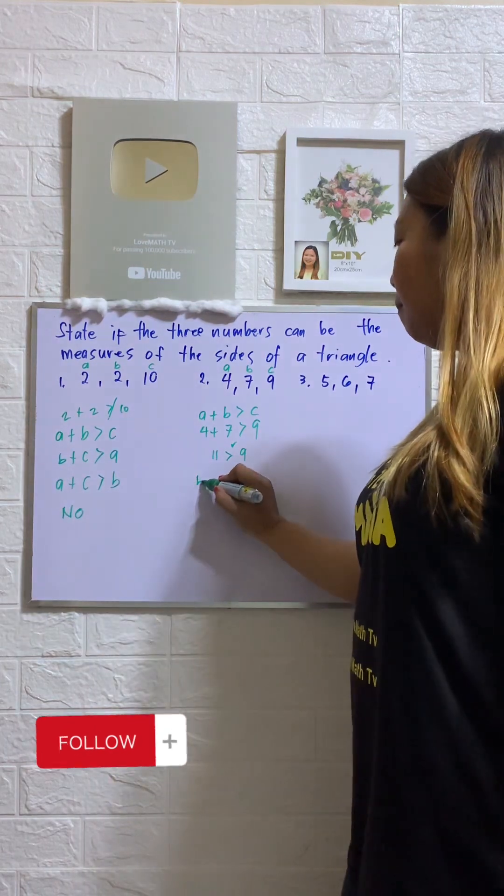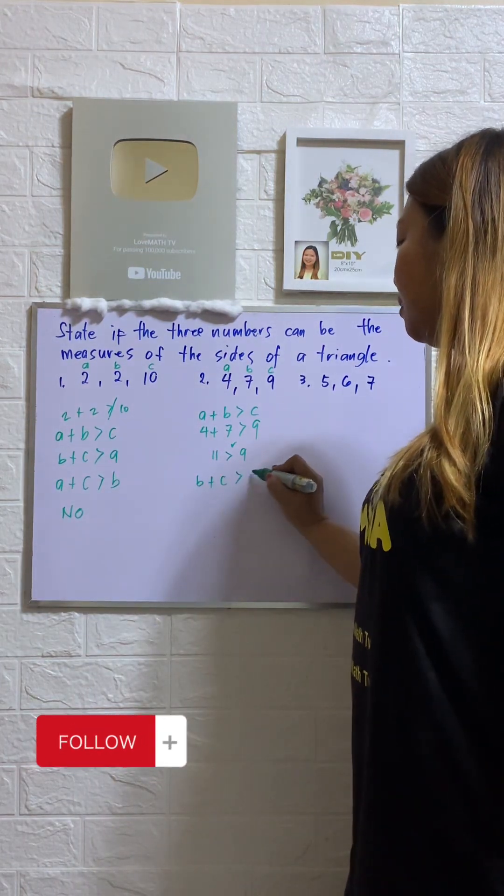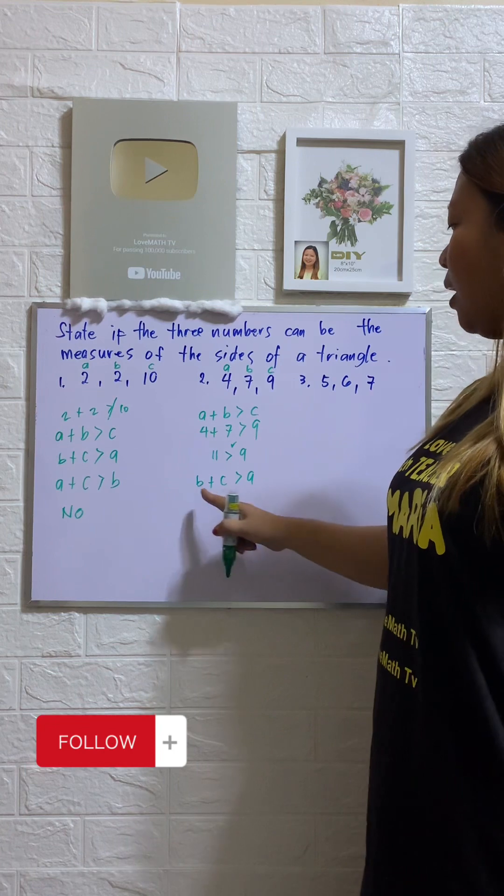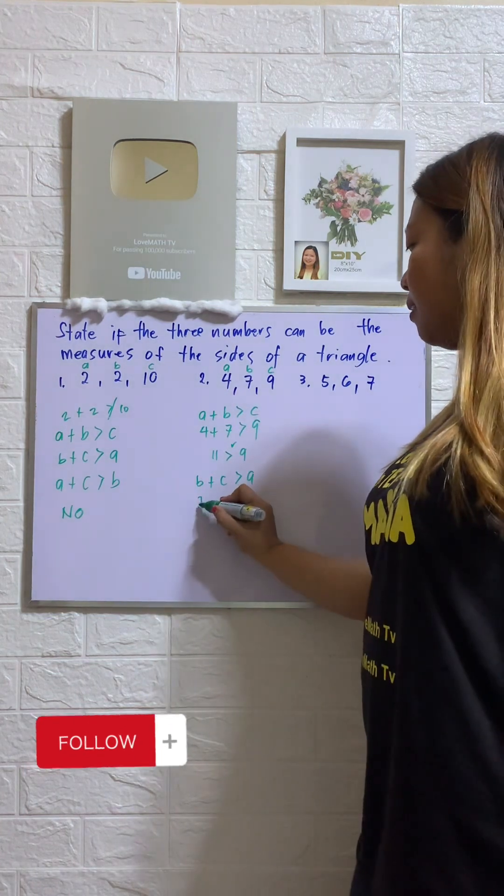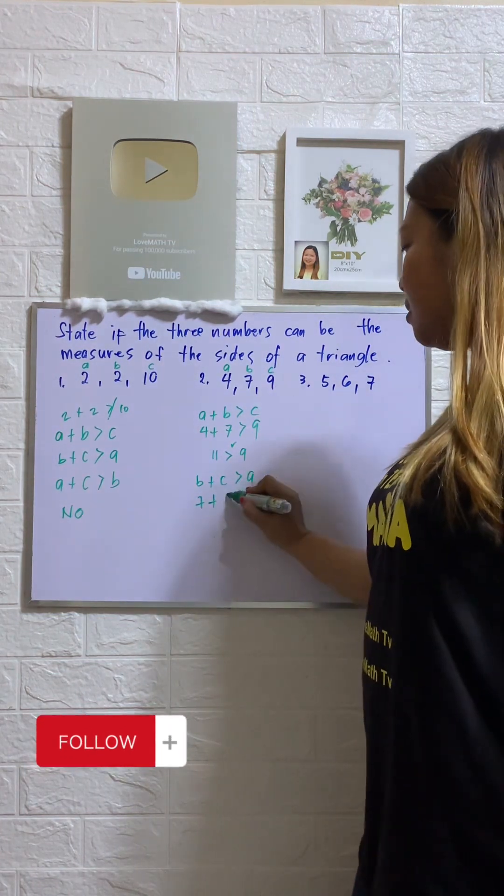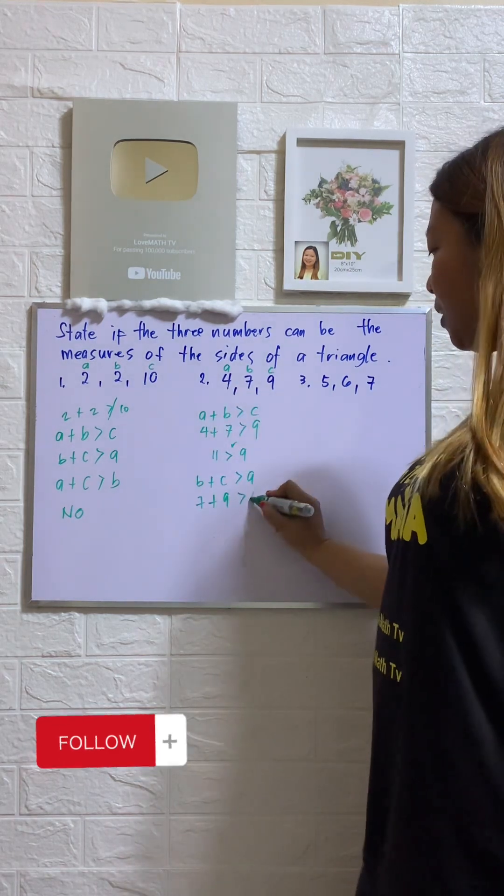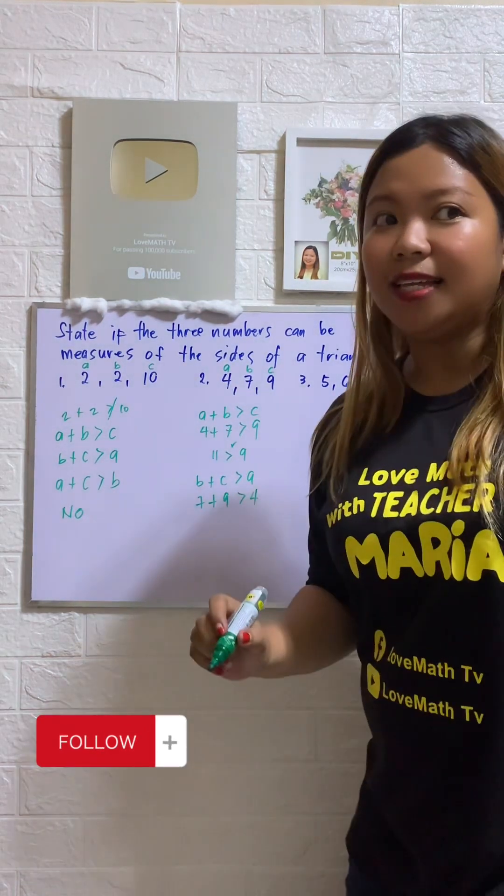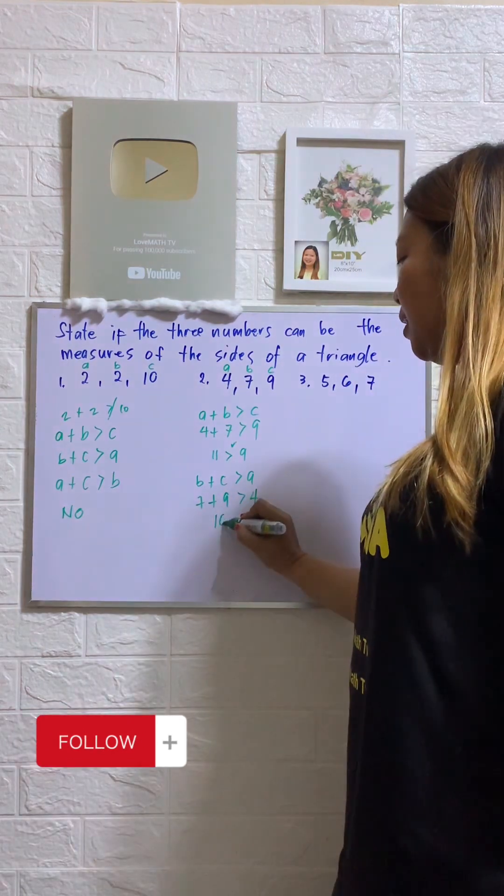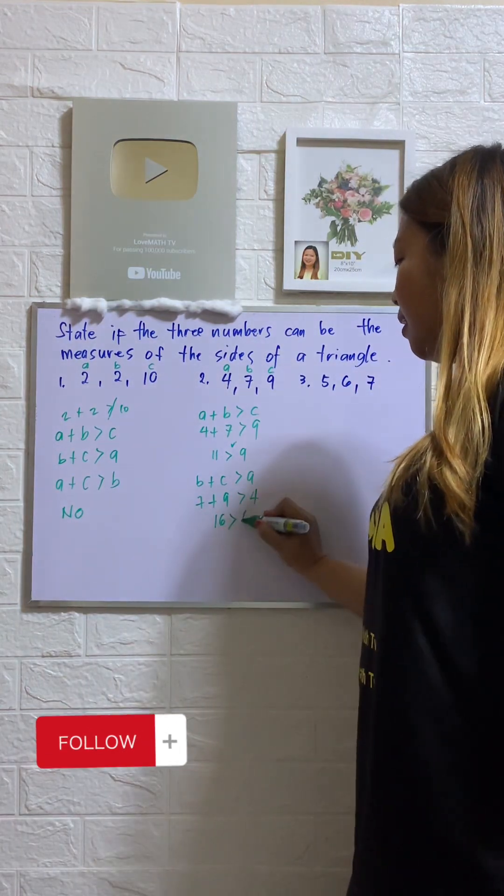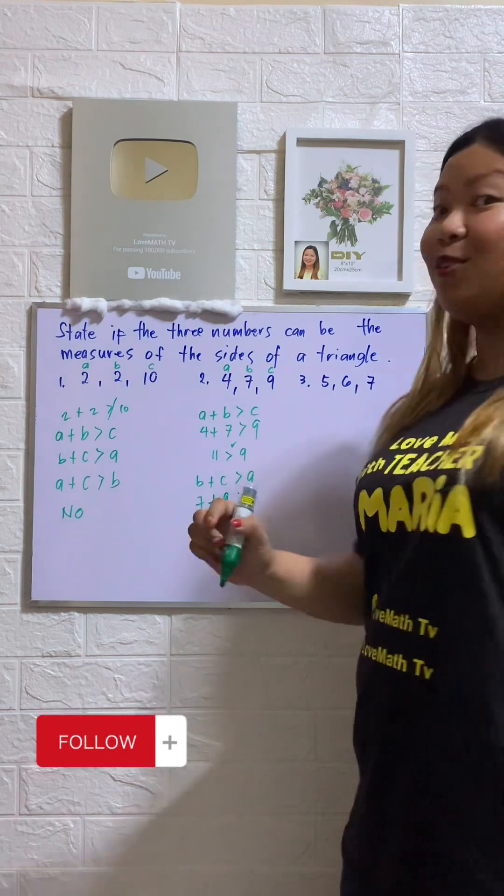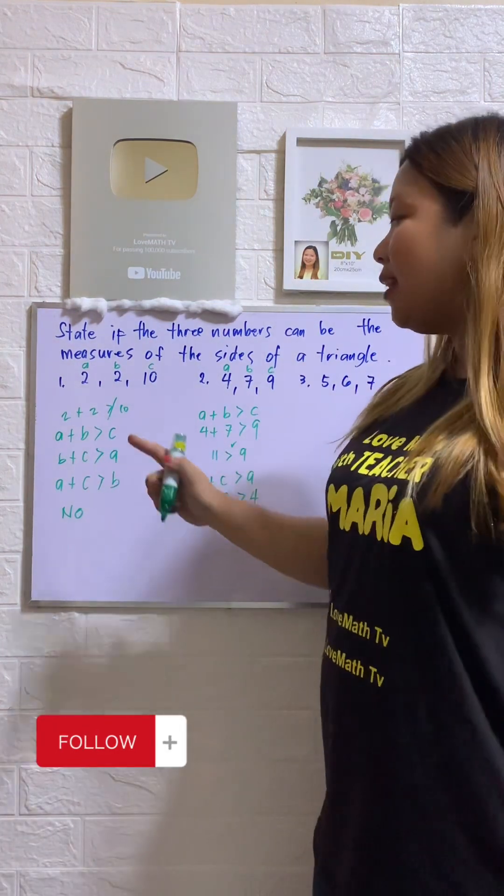How about the second condition? B plus C, is that greater than A? Let's try. What is our B? 7 plus our C is 9. Is that greater than our A, which is 4? Let's try. 7 plus 9, that is? Correct, 16. Is 16 greater than 4? Yes. So the second condition is satisfied also.